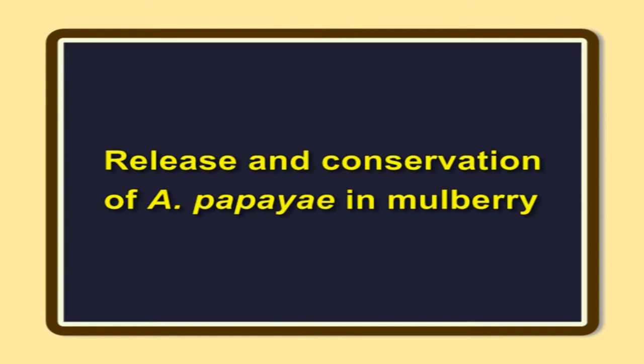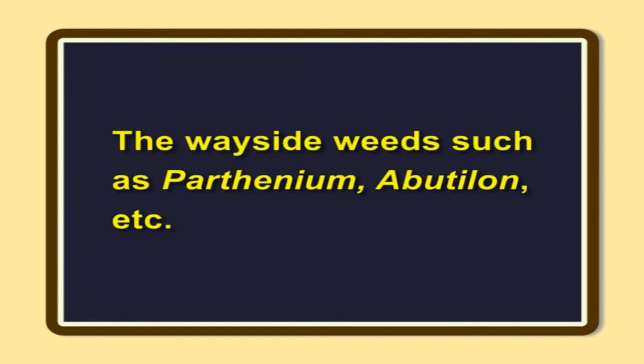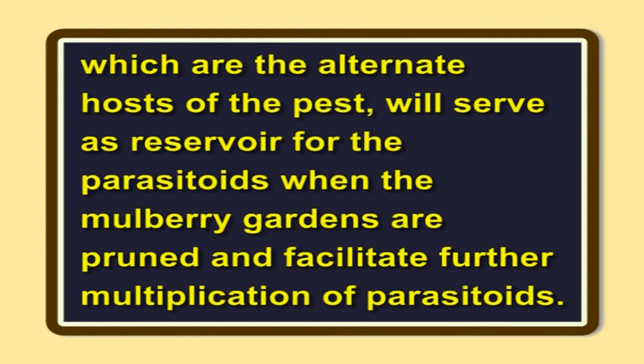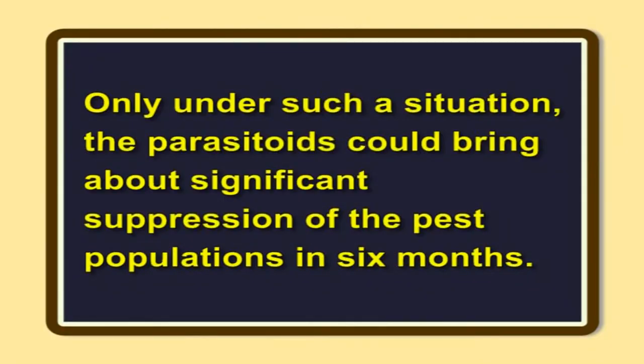Release and conservation of Acerophagus papayae in mulberry. Release the parasitoids in papaya mealybug-infested mulberry gardens at the rate of 100 to 200 adults as early as possible, as they are short-lived. Once released and conserved, the parasitoids will establish naturally and control the papaya mealybug on mulberry as well as on other crops on a long-term basis. Wayside weeds such as Parthenium and Abutilon, which are alternate hosts of the pest, will serve as a reservoir for the parasitoids when mulberry gardens are pruned, and facilitate further multiplication of parasitoids. Hence, these weed plants should not be destroyed. One should avoid using chemical insecticides so as to achieve better conservation of field-released parasitoids and effective suppression of the papaya mealybug. Only under such a situation can the parasitoids bring about significant suppression of the pest populations in six months.